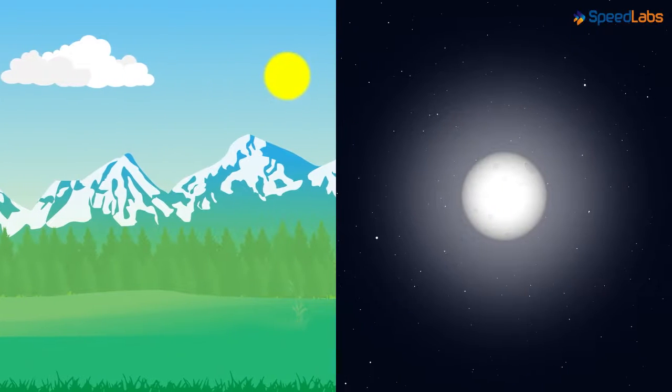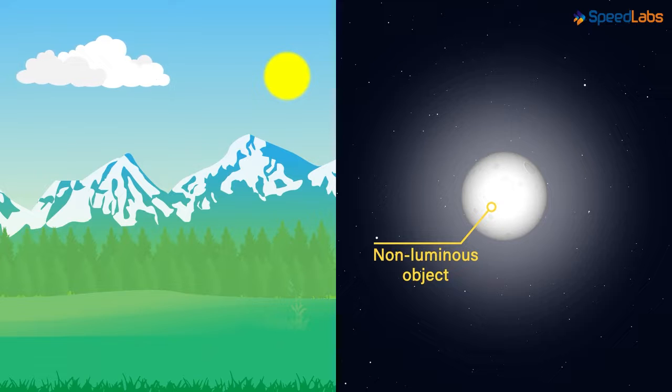At night, we are able to see the moon because it is reflecting the light from the sun. Note that moon is non-luminous and it cannot generate its own light.